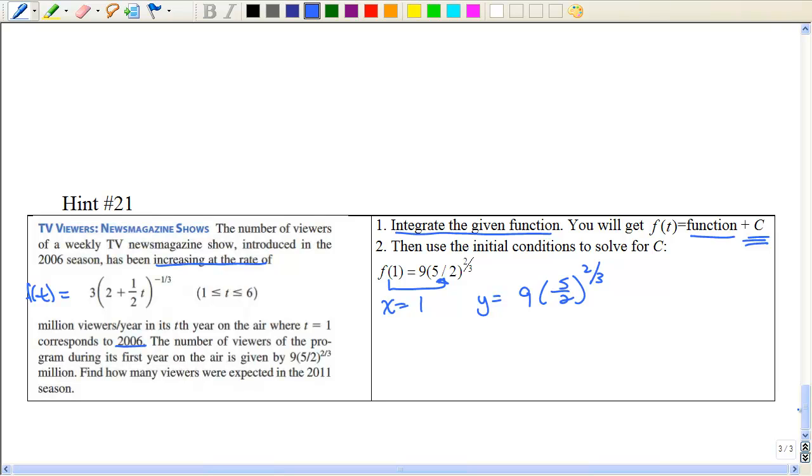So when x is 1, y is going to be 9 times 5 halves to the 2 thirds. So if you make that substitution, you're going to find out what c is. And then once you do that, you'll have your function. And then you can, if it says for 2011, whatever year that corresponds to. So let's see, if t is 1 for 2006, 2 would be 07, 3 would be 08, 4 would be 9, 5 would be 10. So let t equal to 6 would be for 2011. But again, it's that initial value problem you're integrating.